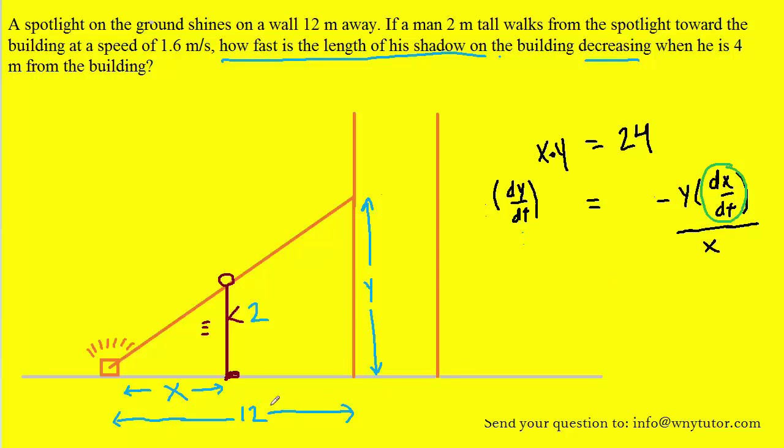Now at this point all we need to do is substitute in known values. Consider dx/dt first. Looking over here we see X was labeled as this distance. What we want is the rate at which that's changing. In other words how fast is that increasing or how fast is that changing? Well that was stated as 1.6 meters per second because the man as he's walking along to the right is basically causing this distance to grow. It's causing this distance to increase. So the speed of the man that they gave us is essentially dx/dt.